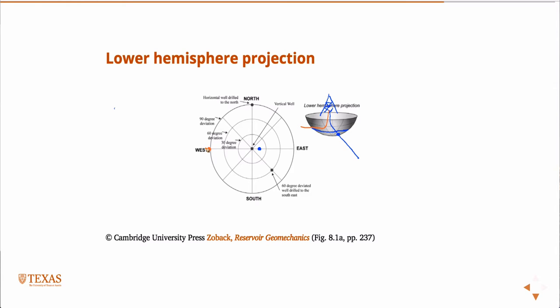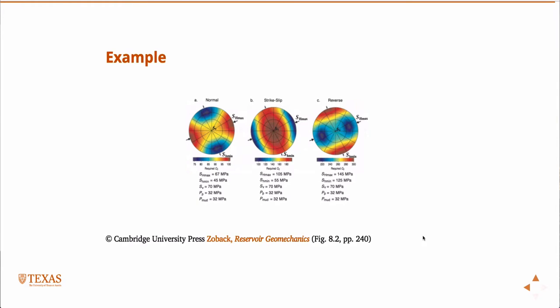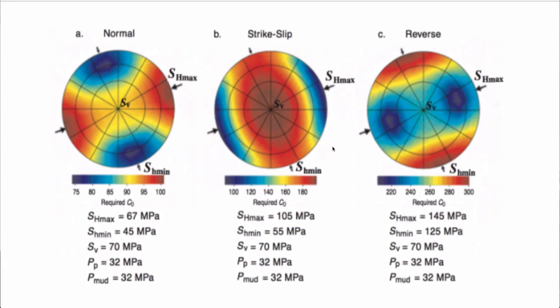So that's a way to view things, and we'll see those in the next slide. There are different ways we can look at it. The example I showed last time was a mud weight window, a delta P, in terms of orientation. Here, what we'll look at is an example. These are the contour plots plotted on top of those lower hemisphere projections for state of stress, and what you're looking at here — the color contours represent the required UCS with a Mohr-Coulomb failure model, the required unconfined compressive strength.